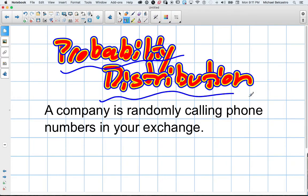Okay, so this is a probability distribution question and this is essentially all they've given us. A company is randomly calling phone numbers in your exchange. They want to know what's the probability that your phone number gets called.